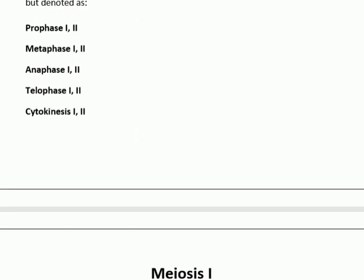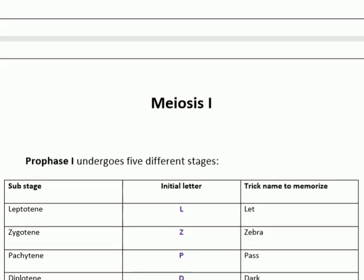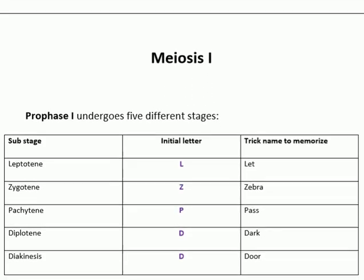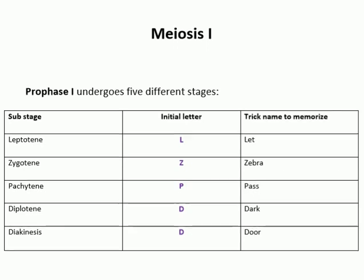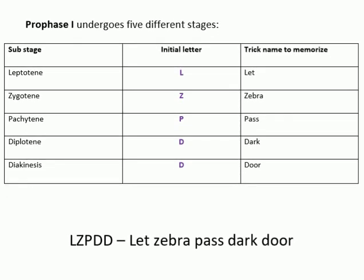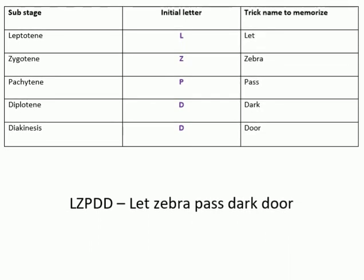The sub-stages involved in prophase I are: leptotene, zygotene, pachytene, diplotene, and diakinesis. To remember these sub-stages, the trick is 'Let Zebra Pass Dark Door.'